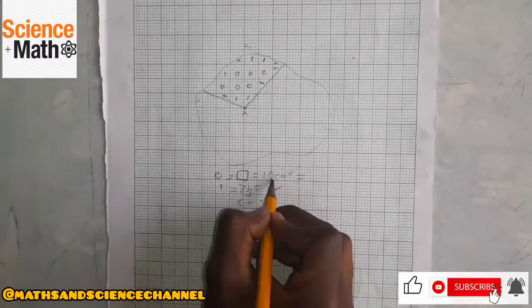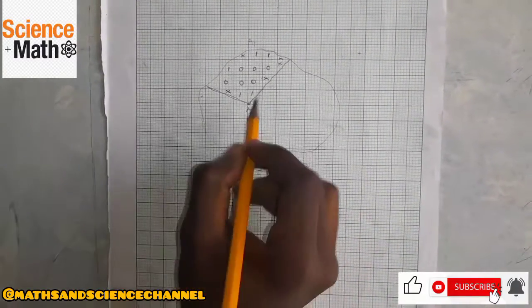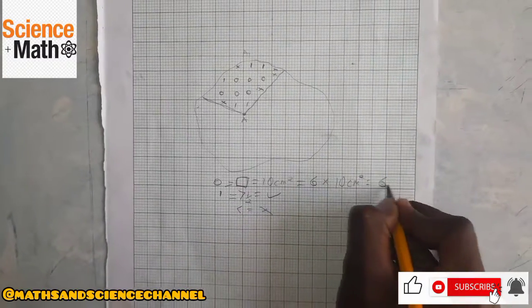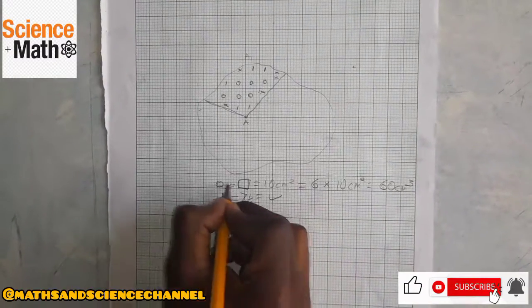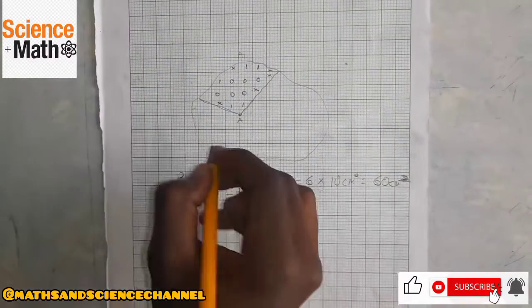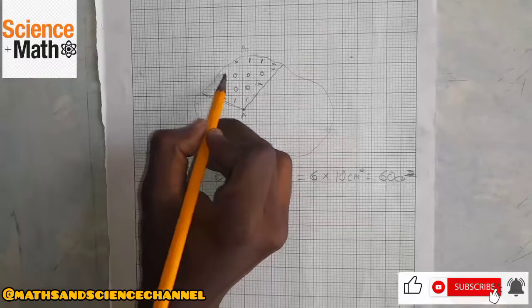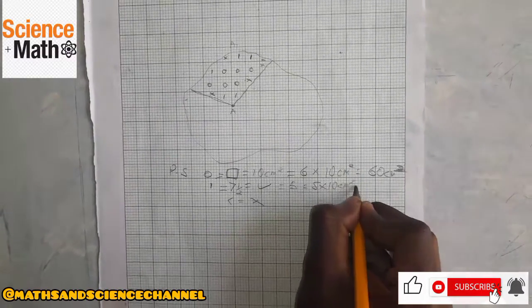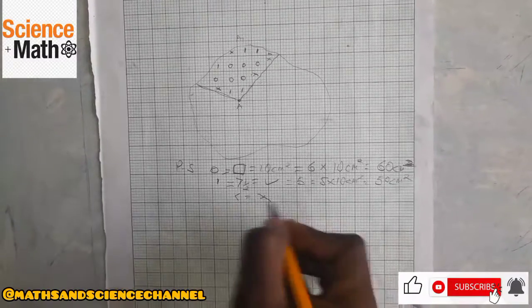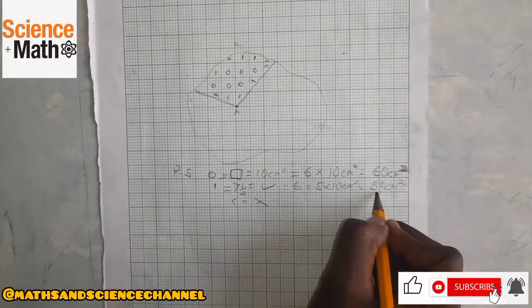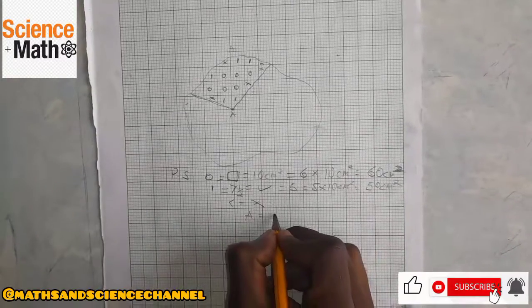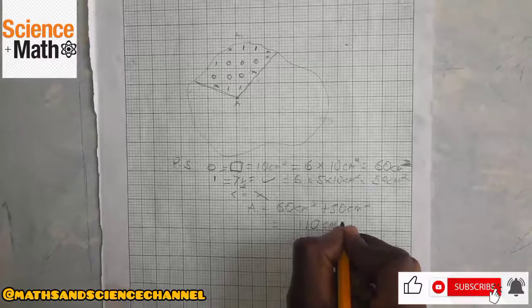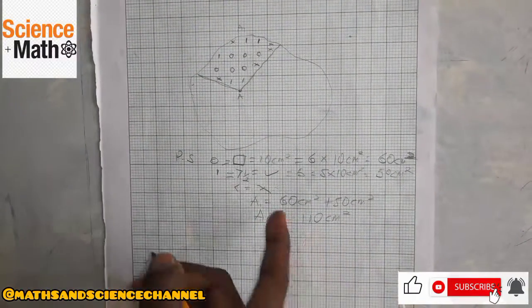For full boxes, we multiply by the scale given. For full boxes we have one, two, three, four, five, six — so that is six multiplied by 10 centimeters squared, giving us 60 centimeters squared. For more than half, we have one, two, three, four, five — so that is five multiplied by 10 centimeters squared, giving us 50 centimeters squared. For less than half we ignore. So the total area for A is 60 centimeters squared plus 50 centimeters squared, which equals 110 centimeters squared.